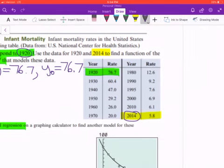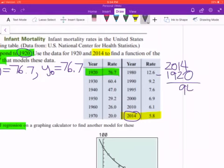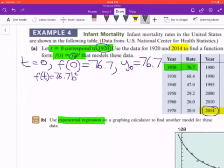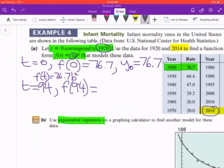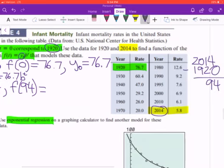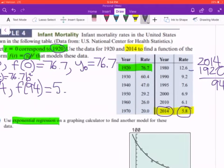So this is what I did. 2014 minus 1920, and we get 94. So what this is telling me is that at t equals 94, the f of 94, the output was going to be equal to the number that we have here, and that percentage is 5.8.